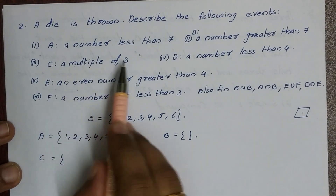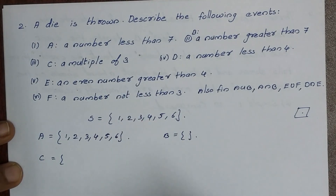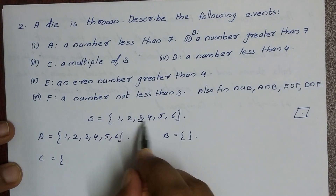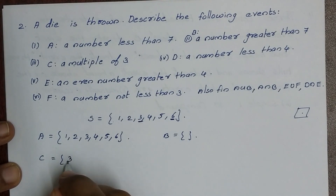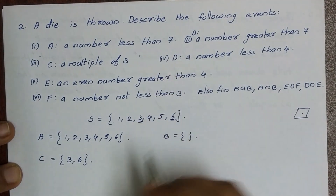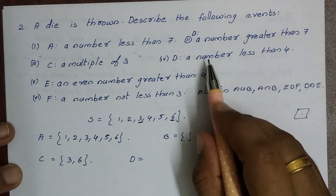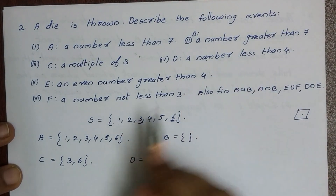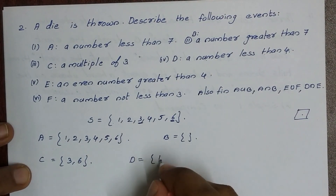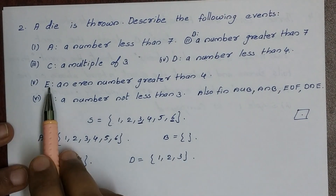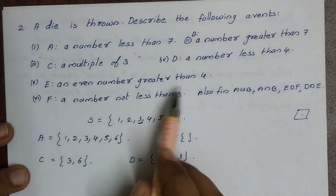Event C is a multiple of 3, so C = {3, 6}. Event D is a number less than 4, so D = {1, 2, 3}.